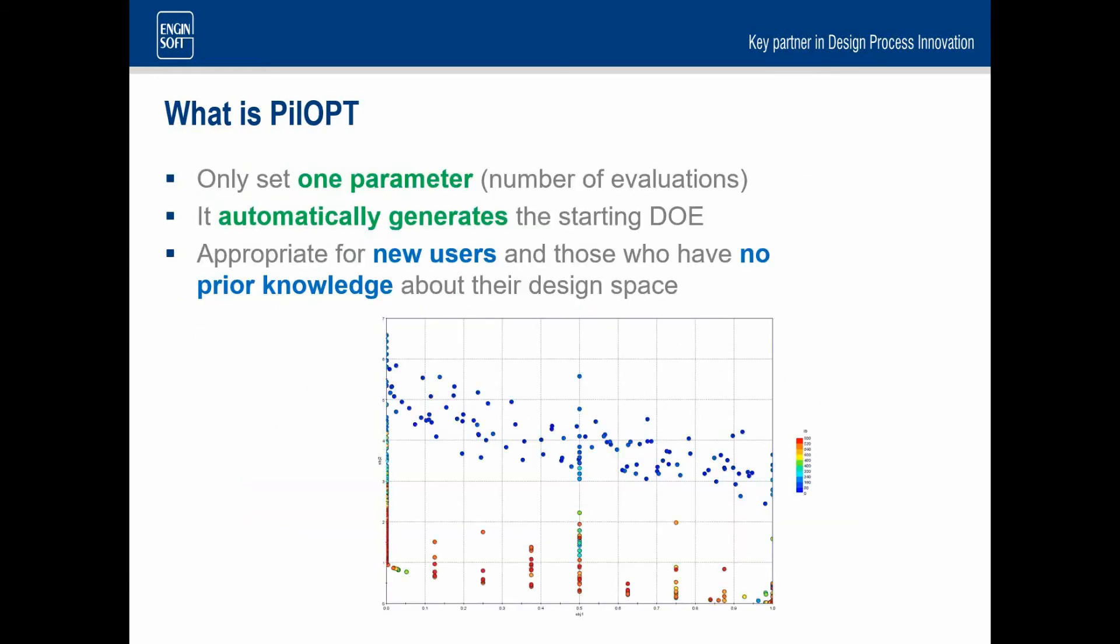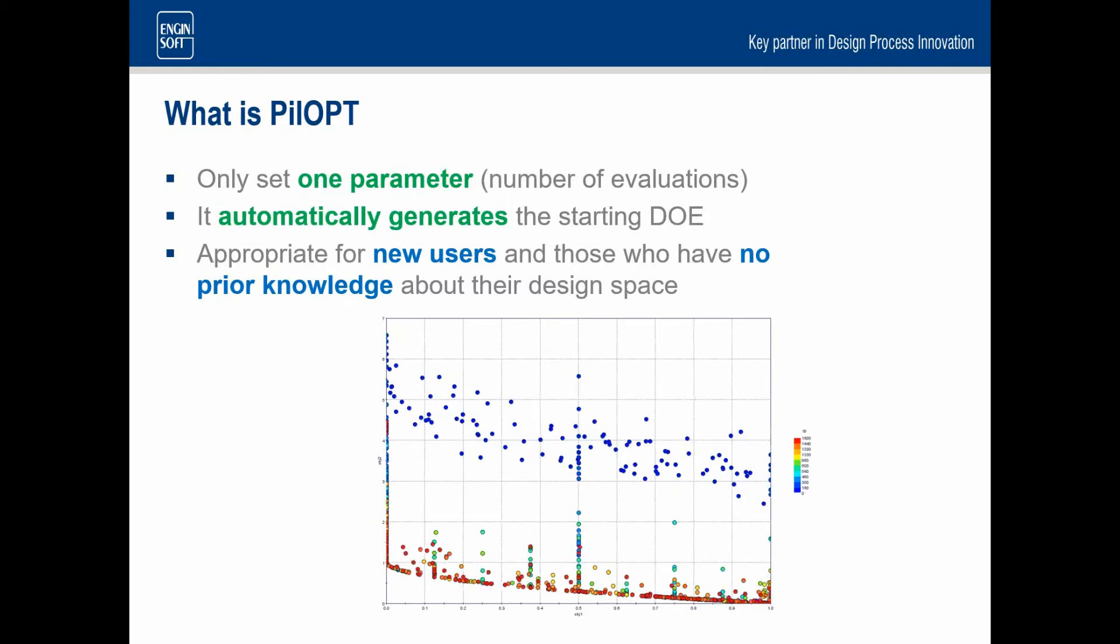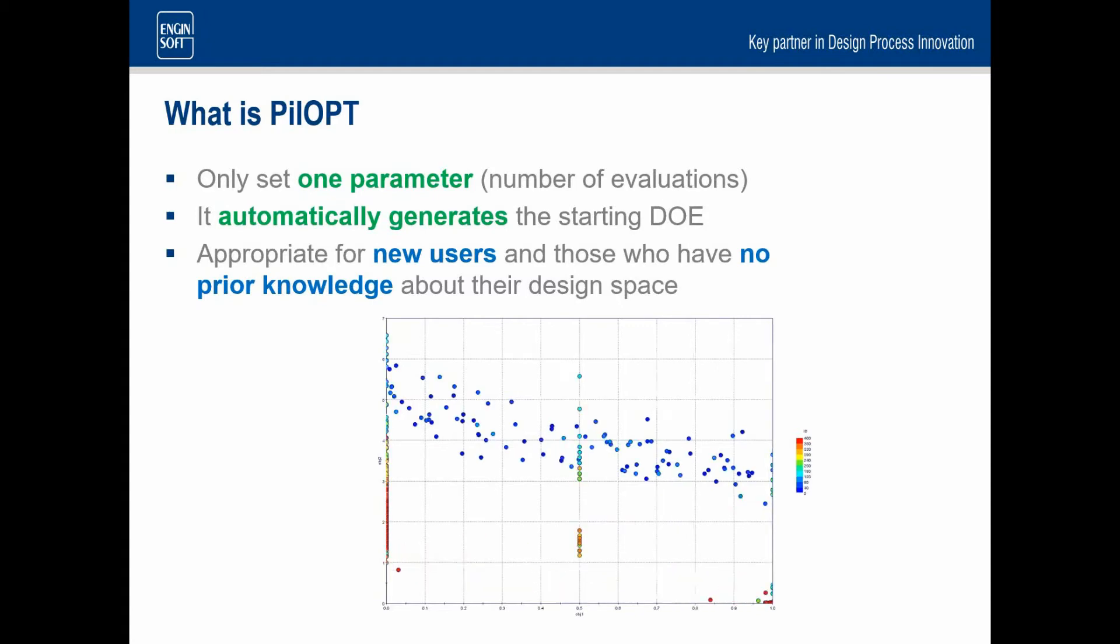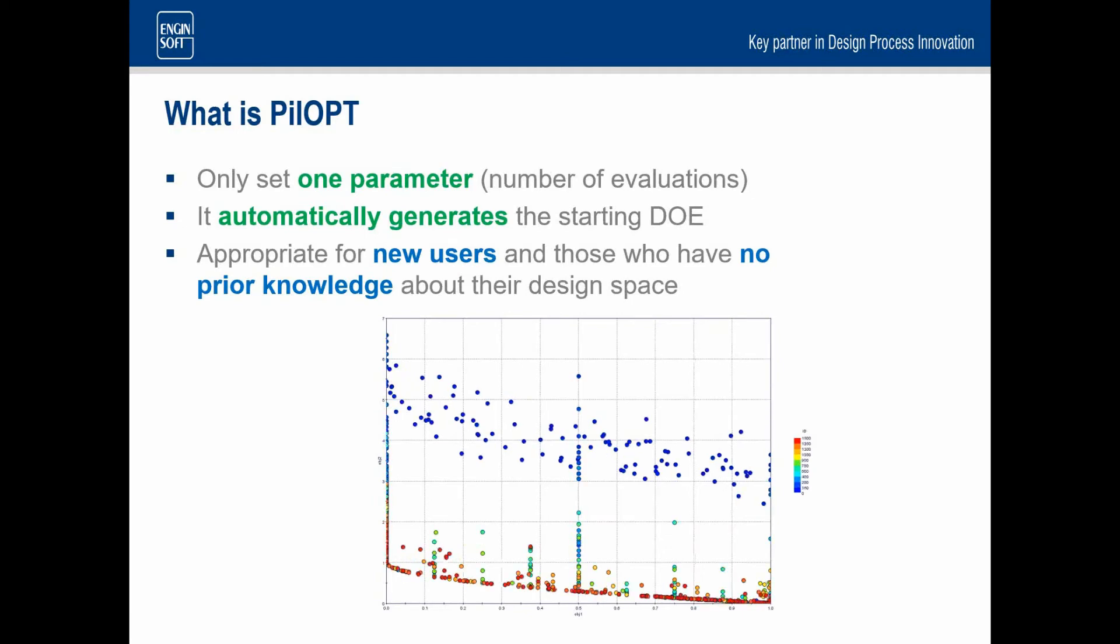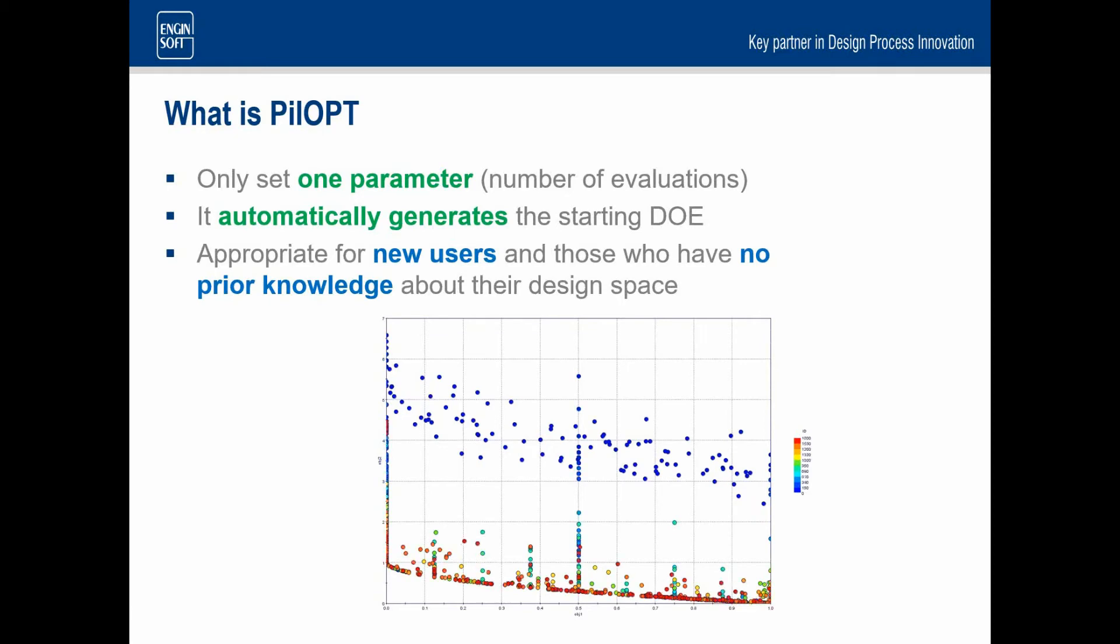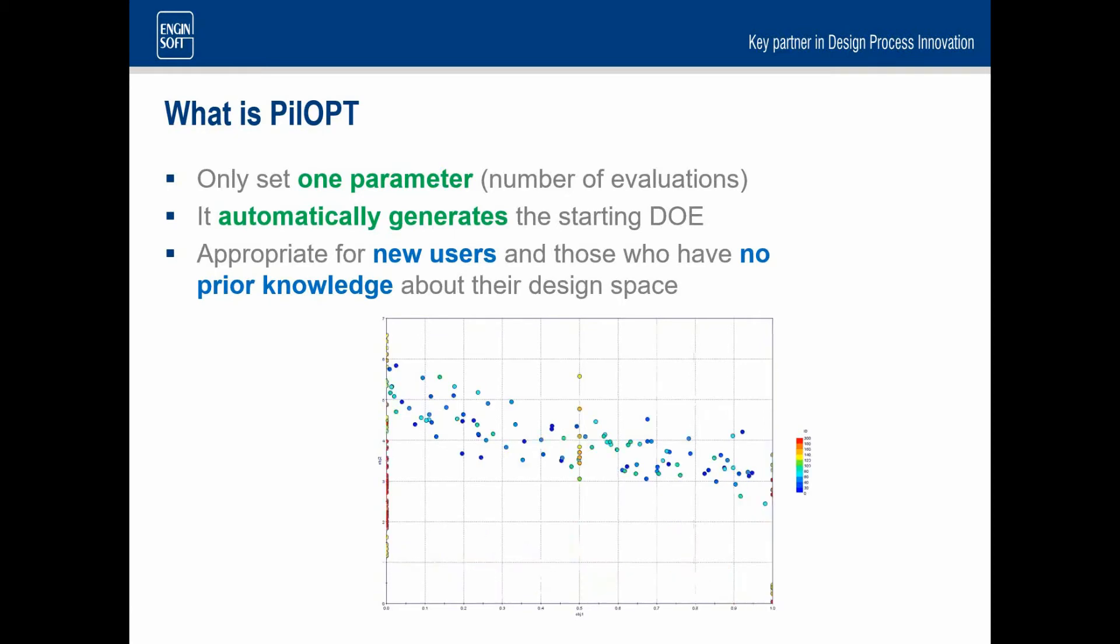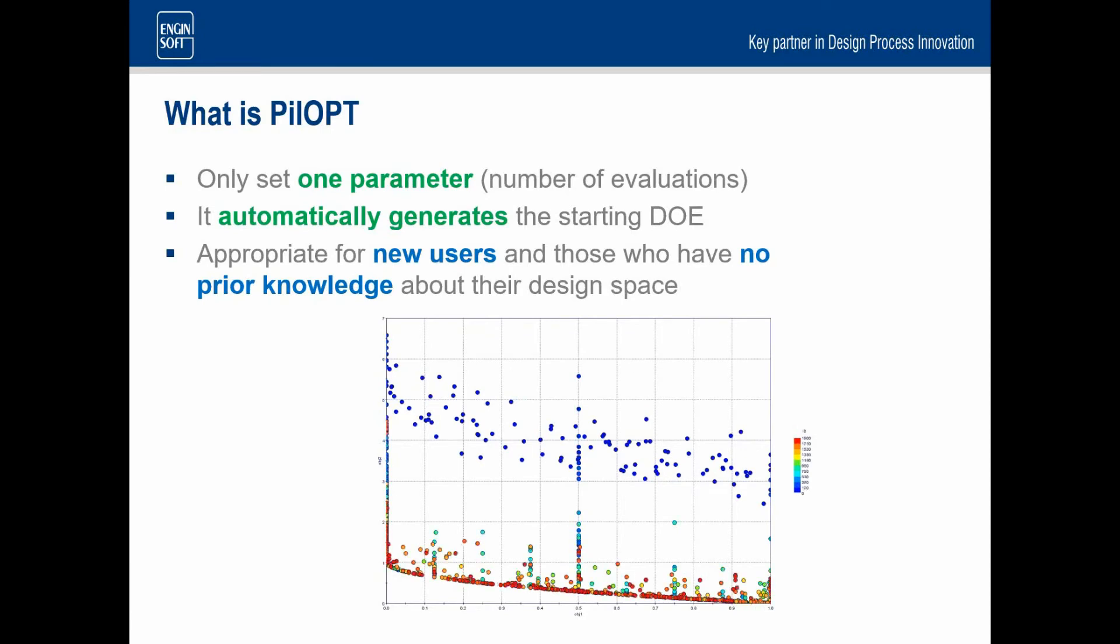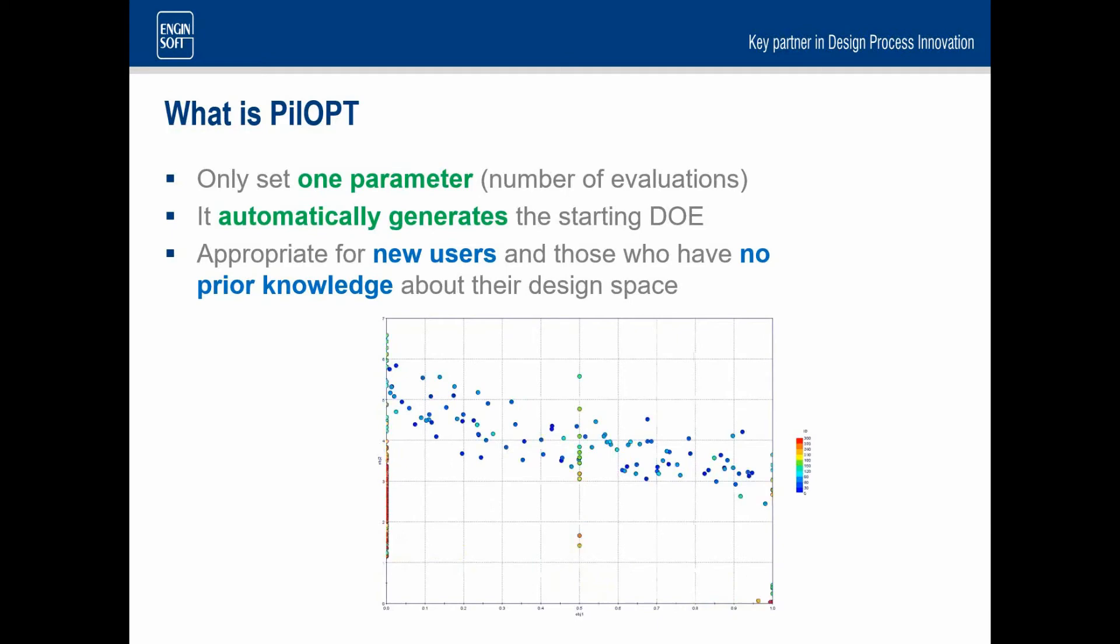Other advantages are that when you're operating PilOPT, we'll show this in the demonstration, there is only one parameter that you need to set, which is just the number of evaluations that you want it to run for. In this case, you also don't have to start your optimization from a starting DOE. You can automatically generate this, and therefore it's really appropriate for new users, but not just new users, those who really have no prior knowledge about their problem at all. So if you knew that your response space was a slope, you might decide that you might want to use a gradient based method just to go straight up that slope. And that might be the most efficient method. But if you really knew nothing about your problem, then an algorithm like PilOPT is just a great way to start your process.